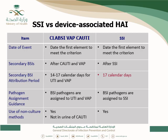Secondary BSI attribution could be 14, 15, 16, or 17 days for UTI and VAP, but it is always 17 days in SSI — three days before the event, the date of the event, and 13 days after. For pathogen assignment guidance, BSI pathogens are assigned to UTI and VAP collected during the repeat infection timeframe, and BSI pathogens are assigned to SSI as well.